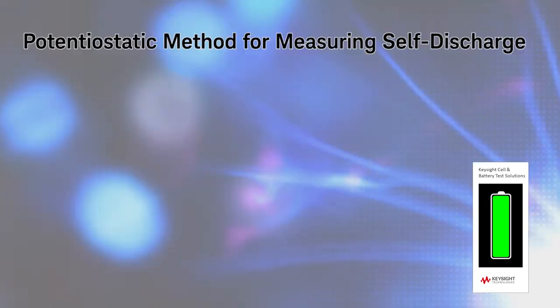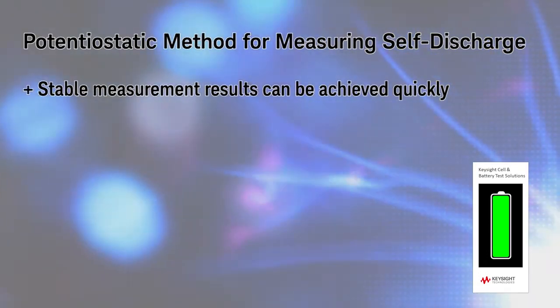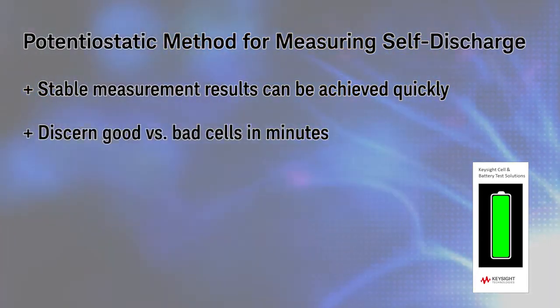The primary advantage of the potentiostatic method of measuring self-discharge is that when executed properly, you can obtain a stable measurement of the self-discharge current very quickly, and you can discern good versus bad cells even faster.